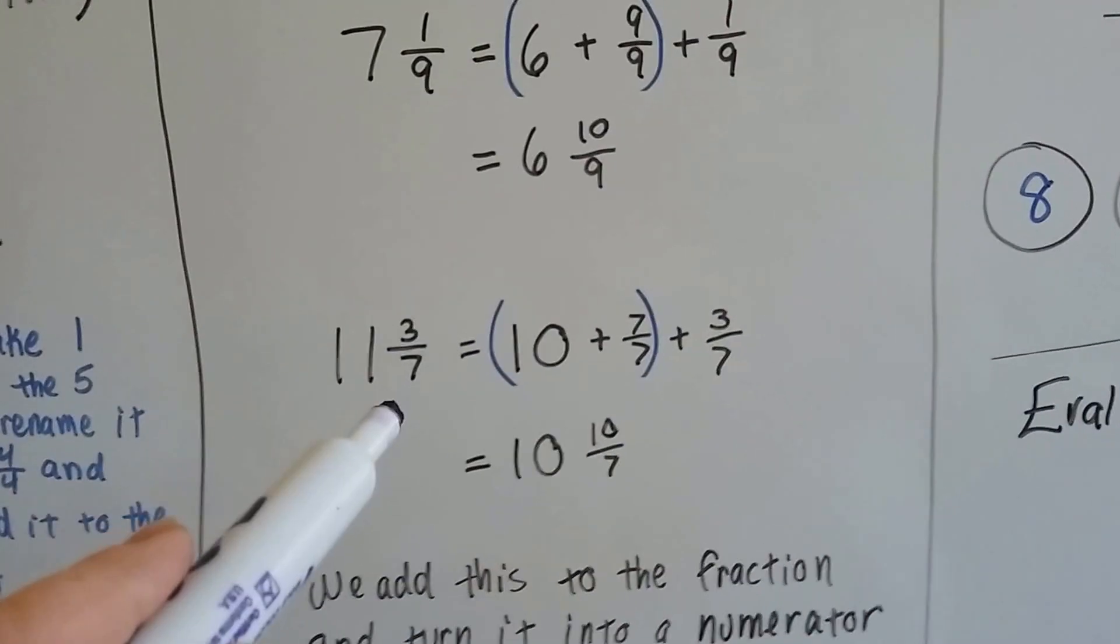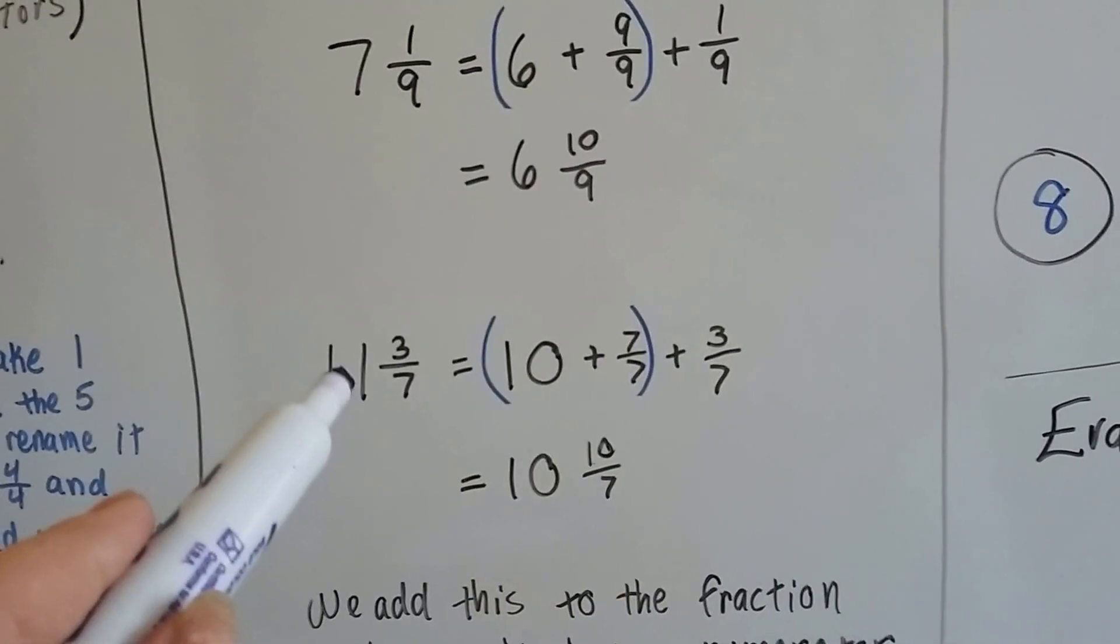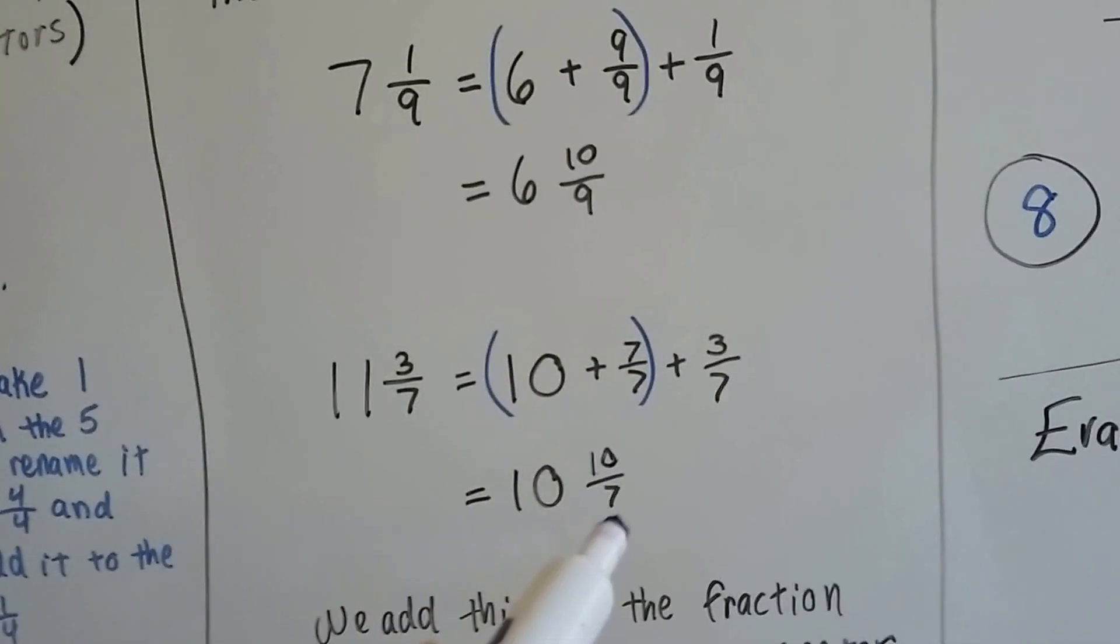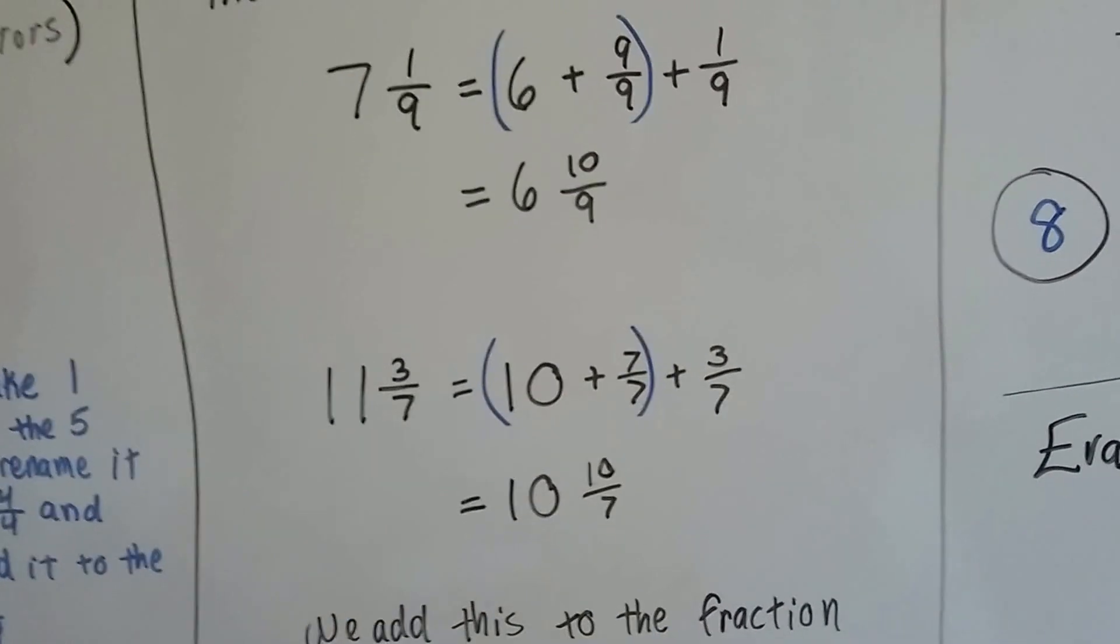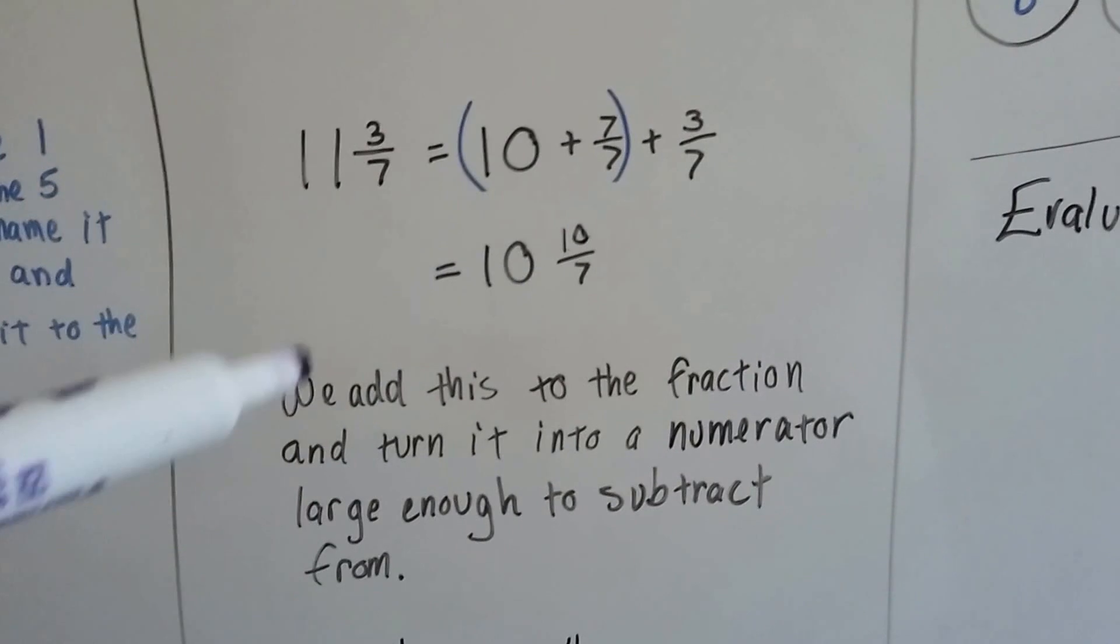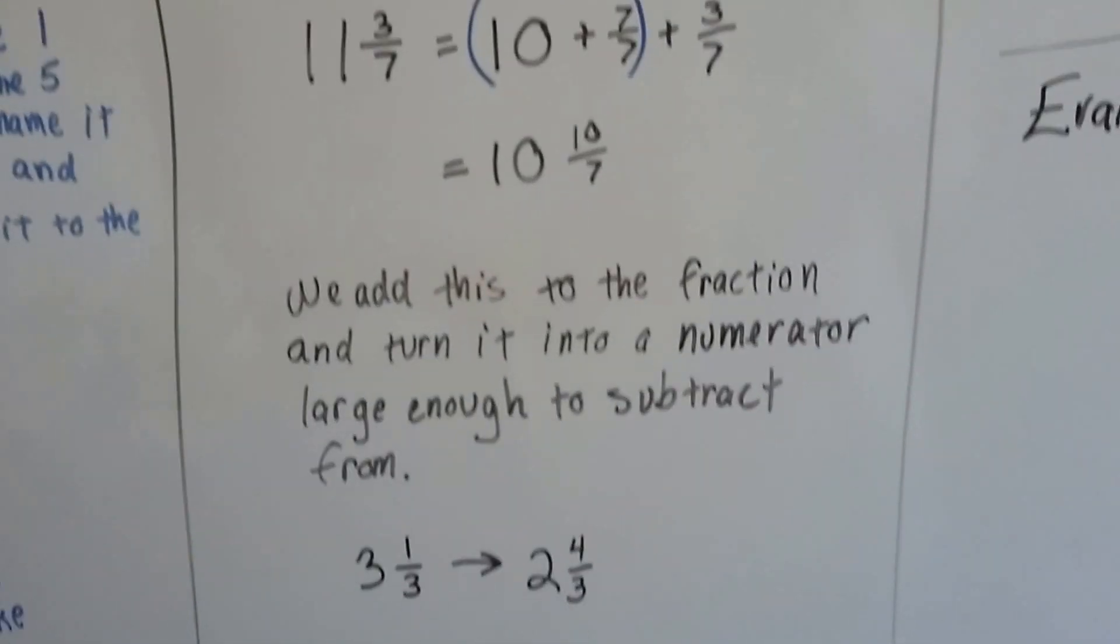If we have 11 and 3 sevenths, we can pull a 7 sevenths out of this as one whole, and we can turn this into 10 and 10 sevenths. We add this to the fraction and turn it into a numerator large enough to subtract from. Now we can subtract from that one.